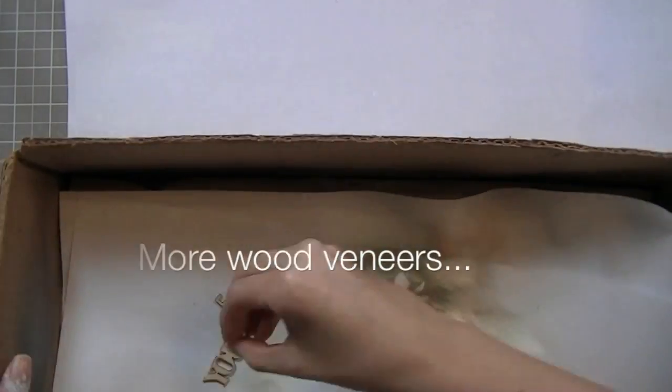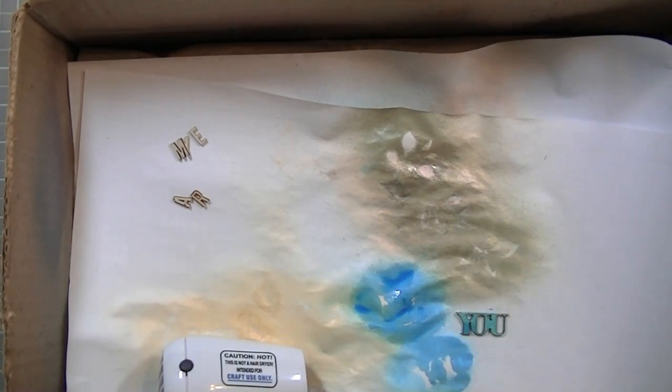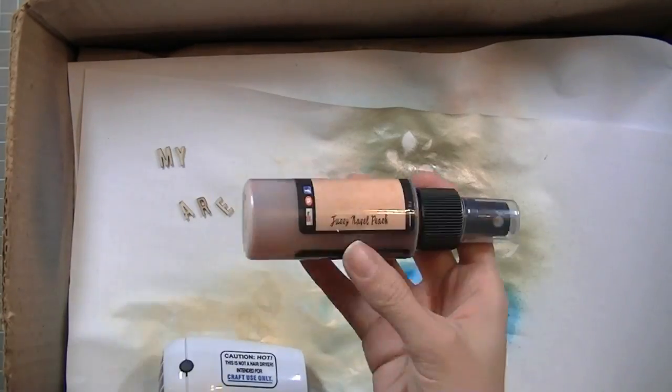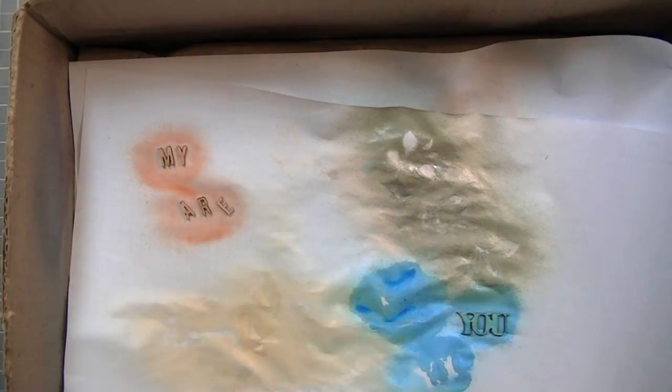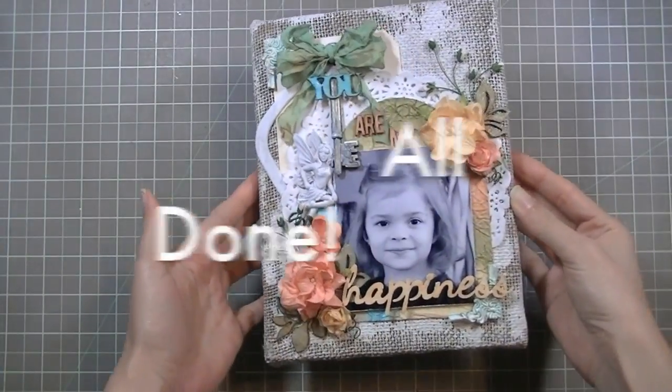And now I got some more wood veneers because I wanted to finish the title. Some of these are from Studio Calico, the little alphabets are. And then that U that you see there in blue, that is a Prima wood veneer. It had a heart on the top and I cut it off because I just wanted the word you. And it's all done.